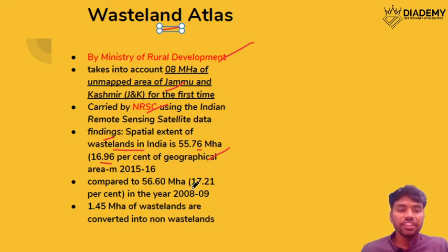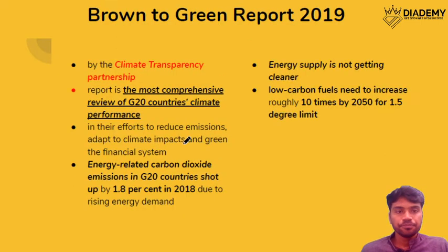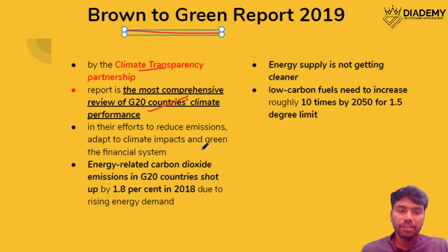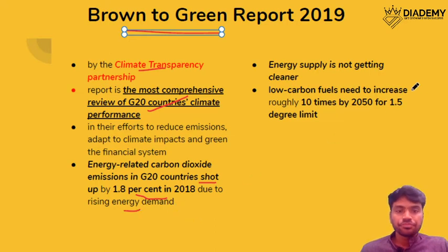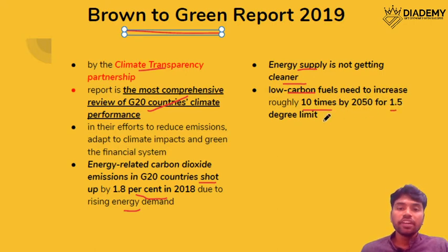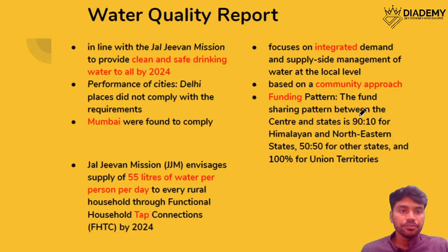A significant portion of wastelands have been converted to non-wastelands compared to the previous year. The Brown to Green Report is given by the Climate Transparency Partnership and provides a comprehensive review of G20 countries regarding climate performance. It found that countries are short by about 1.8% in 2018 due to energy demand. Energy demand is not getting cleaner, and low-carbon fuel use must increase at least 10 times by 2050 to stay within the 1.5°C limit set by the Paris Agreement.